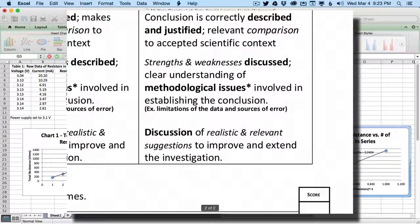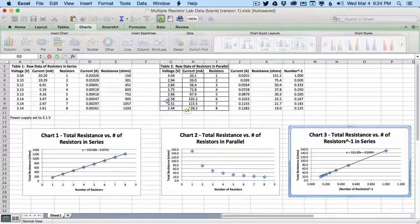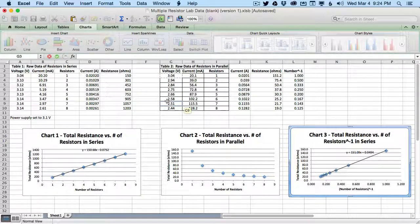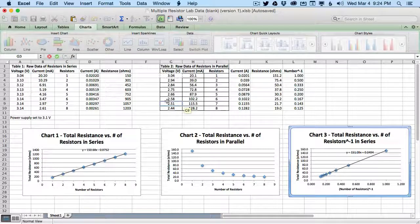I also want to talk about a discussion of realistic and relevant suggestions to improve and extend the investigation. So not only make improvements on some of the weaknesses you've done before, but how can you extend it? Where else could you go with this? So one example might be to say, hey, I want to do this experiment with various values of resistors. Maybe you want to do this experiment not with the same resistors, but add multiple different types of resistors. Certainly that would be a very different experiment and the analysis would be much more involved.